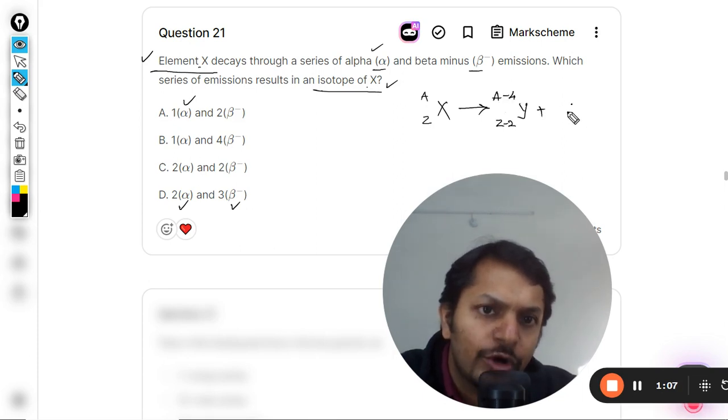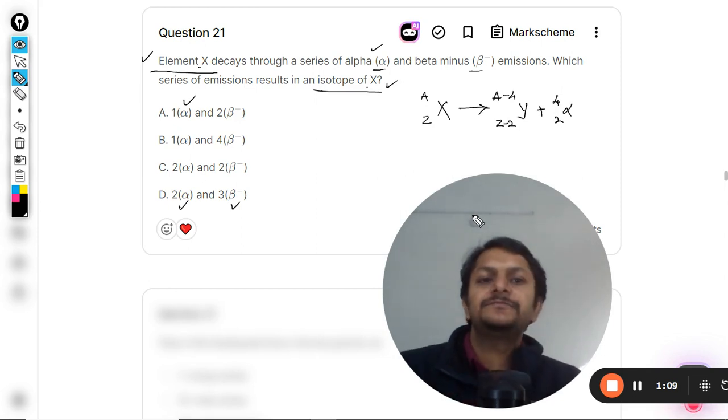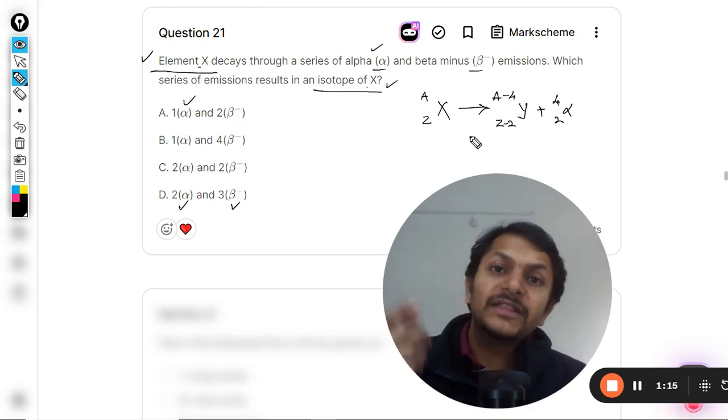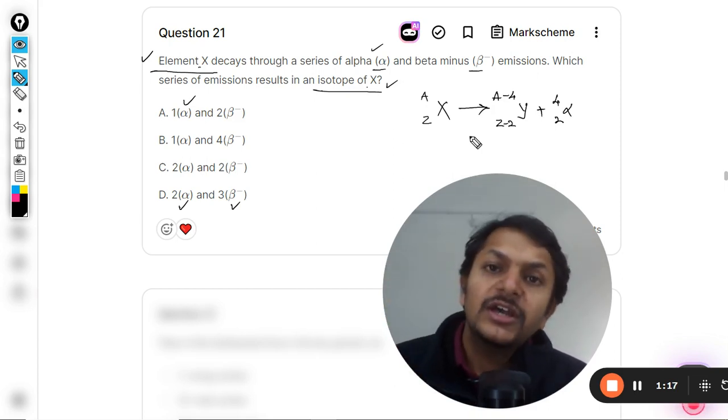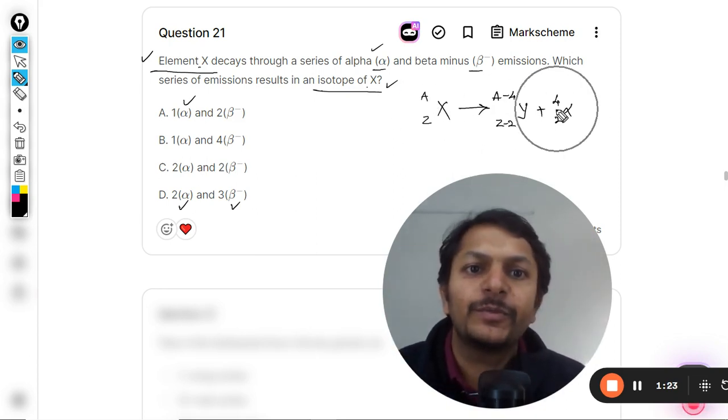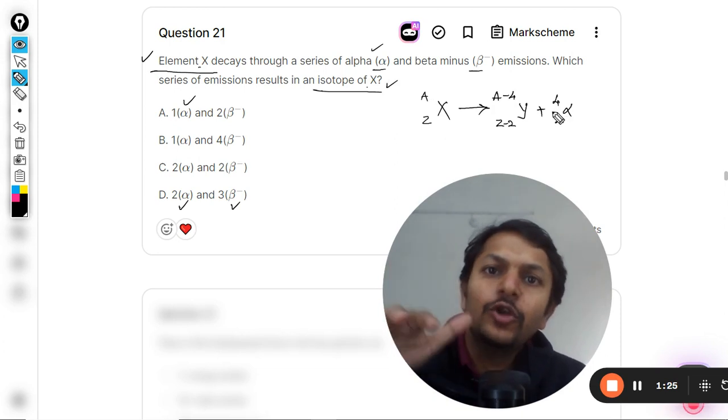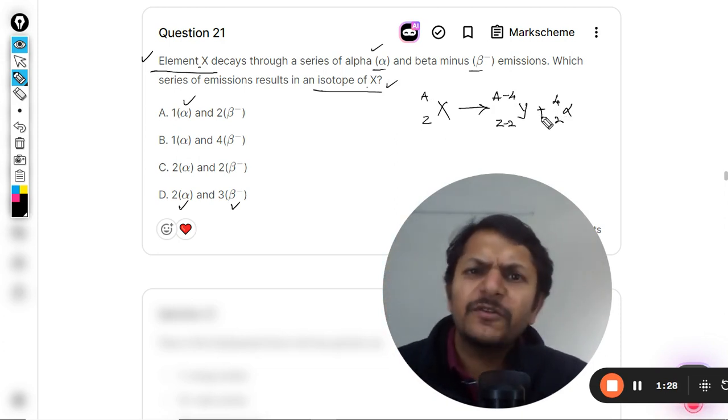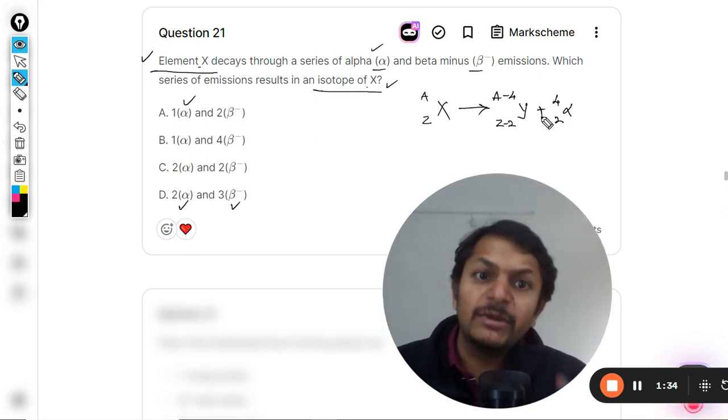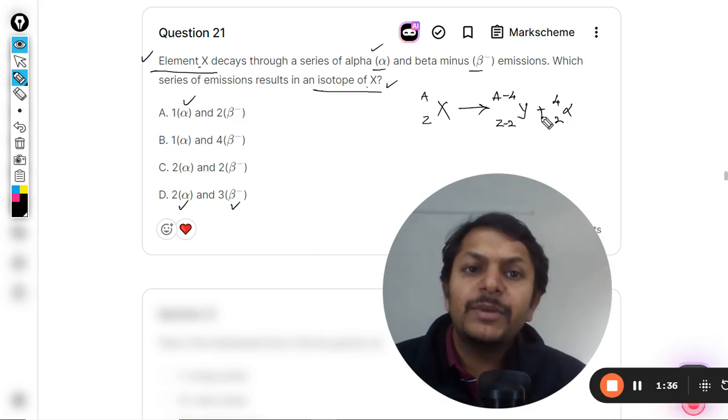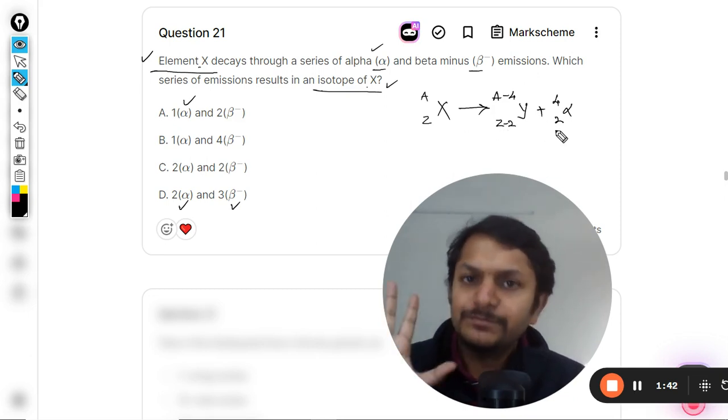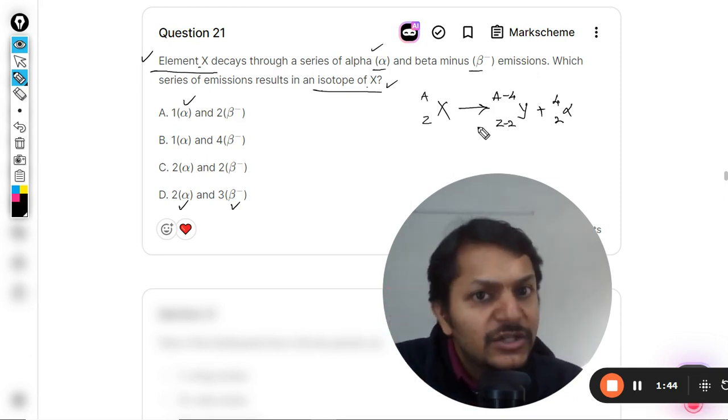Alpha decay will create another thing which will have atomic number less by two and mass number less by four, because alpha is written like this. I told you earlier a very famous Soddy-Fajan rule - this rule is valid in nuclear reactions also. The rule states A = A-4+4, and Z = Z-2+2.